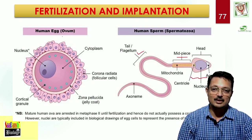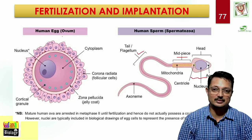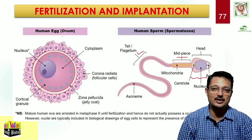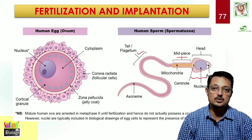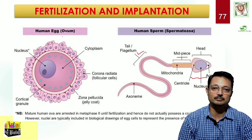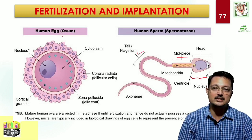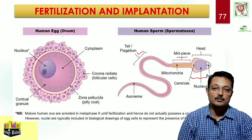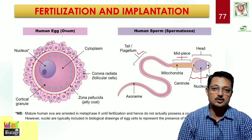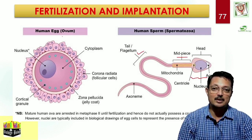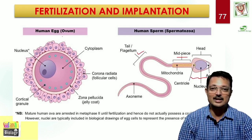Human egg ovulation is that important event which occurs on the 14th day of the menstrual cycle. The Graafian follicle releases the secondary oocyte. Please remember, it is not the ovum at this stage. The secondary oocyte is released — the principle being the economization of resources. When fertilization is initiated, the second meiotic division will be completed and the secondary oocyte will be converted into ovum and the second polar body.